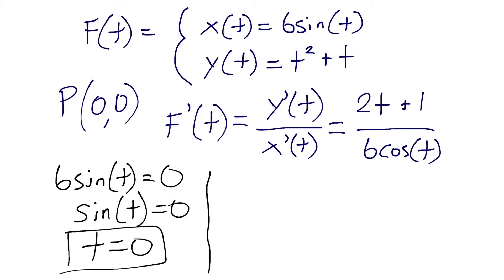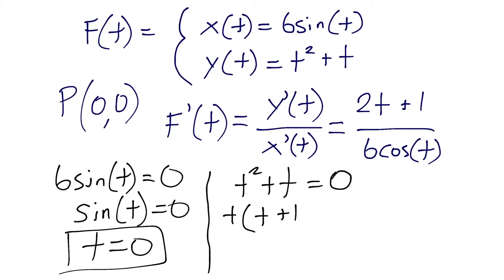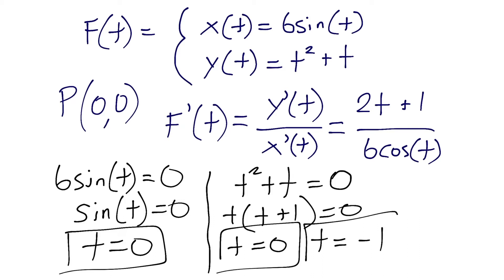Now let's do the same for y. We take t squared plus t and set it equal to 0, since our y coordinate at the origin is 0. Factoring out a t gives us t(t + 1) = 0, so t equals 0 and t equals negative 1. We choose the solution that matches in both x and y equations — that solution is t equals 0, so we ignore the negative 1.